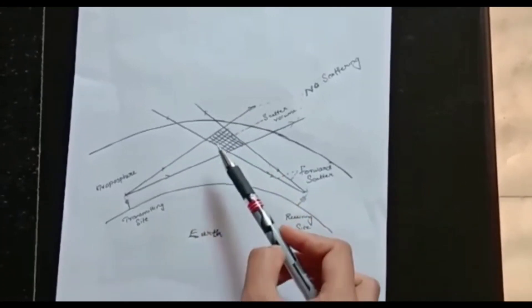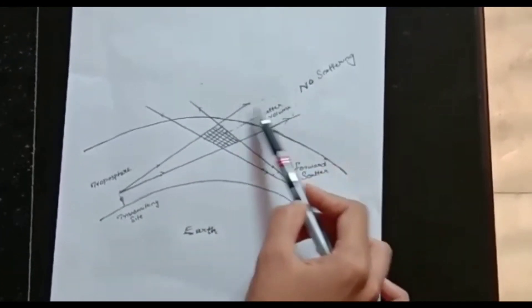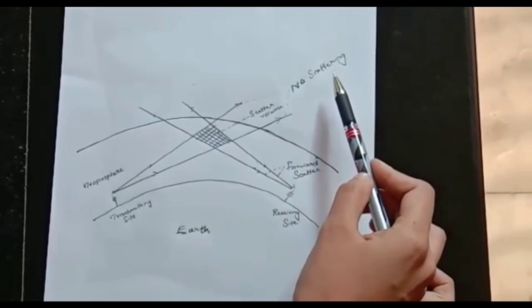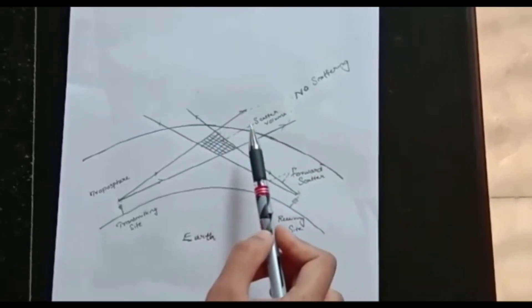Here some of the signals are not scattered. These signals are not scattering in this direction. Here this is the scatter volume. Next are the advantages and disadvantages of troposphere scattering propagation.